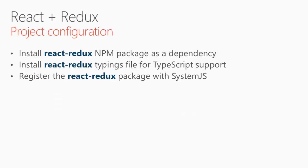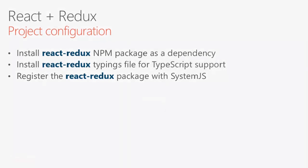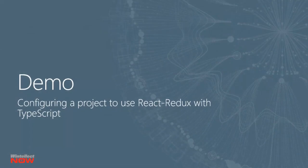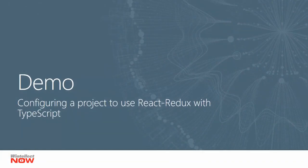Now to work with React Redux, we're going to have to install the NPM package called React Redux. We're also going to be installing the typings file since we're using TypeScript — you don't have to use TypeScript, you can use plain JavaScript if you'd like. Unlike Redux, which actually comes with strong typing definitions built in, React Redux does not, so you have to download it as an external typings file. And then finally because we're using SystemJS, we're going to register the React Redux package with our project in our SystemJS configuration.